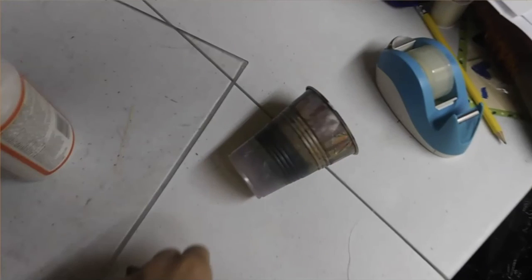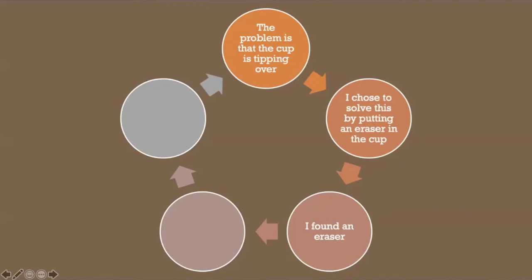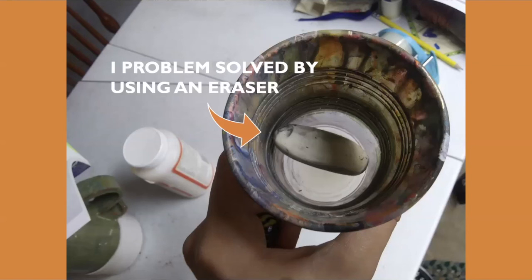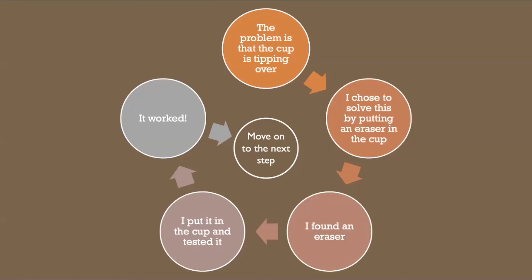I noticed that the cup kept tipping over whenever I was running tests. So I determined that as the problem, was that the cup kept tipping over. And I chose to solve this problem by putting an eraser in the cup. Then I went out and found an eraser. I put it in the cup, so I executed. And then I tested it. And sure enough, it worked. So when it worked, I was able to determine that I could move on to the next step.